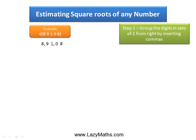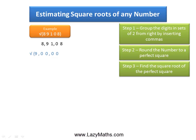And then the next step is to find out a perfect square which is close to 89,108, and that could be 90,000 because 90,000 is a perfect square of 300. 300 squared is 90,000 or square root of 90,000 is 300.